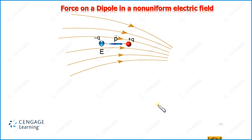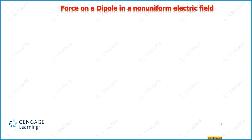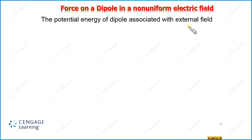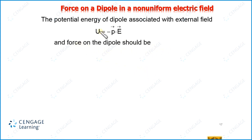Now let us calculate this force. To do so, we need to calculate the potential energy associated with the external field. We have the expression for potential energy of a dipole placed in an external electric field: U = −P·E, where P is the dipole moment and E is the external electric field at the center of the dipole. Since potential energy is associated with a conservative field, the force acting on the dipole can be calculated by taking the gradient of the electric potential energy. So force on the dipole equals negative gradient of the potential energy.